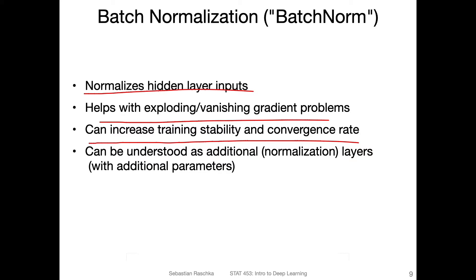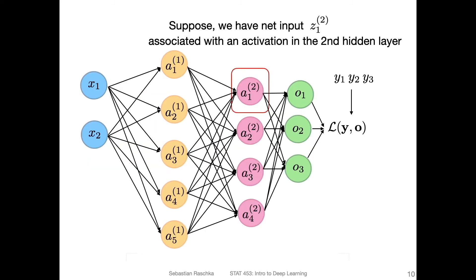And overall it can increase the stability during training. So in that way, training progresses more smoothly and the convergence rate improves. That means we may need fewer epochs to get the same loss that we would achieve if we don't use batch norm. Usually with batch norm, the networks train faster.